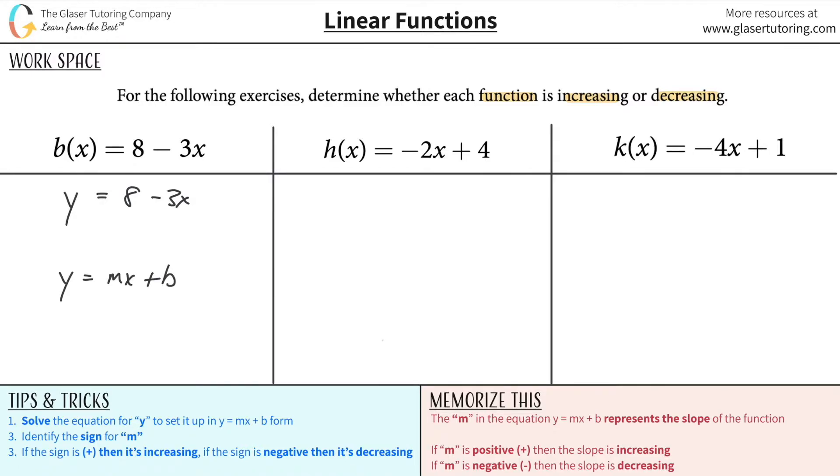So we're basically really close here, except it looks like the x is in the wrong spot. That's not a big deal. All you have to do is simply move this to that side and move that to the other. Don't change the signs, though, because you're not moving it across the equal sign, you're just moving it on the same side. So this is going to be negative 3x plus 8.